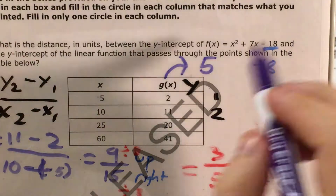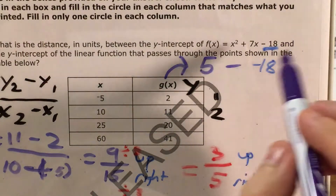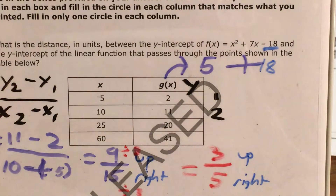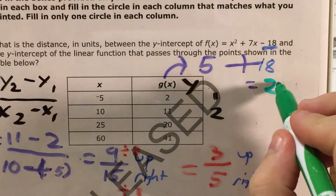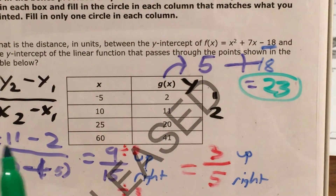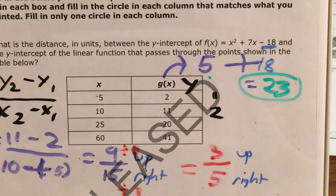So in order to find the difference here, I just need to subtract 5 minus negative 18, which is the same thing as 5 plus 18, because two negatives make a positive, which gives me a final answer after all that work of 23. So 23 is the difference, or the distance, between the y-intercept of negative 18 and the y-intercept of 5.